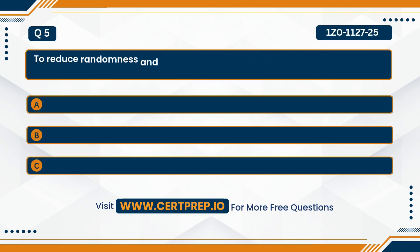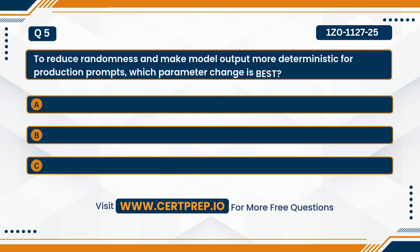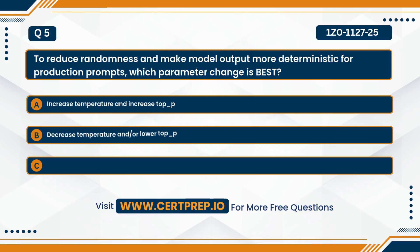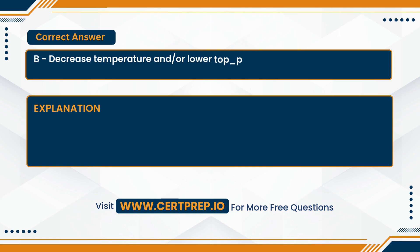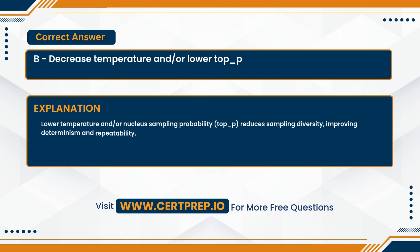Question five. To reduce randomness and make model output more deterministic for production prompts, which parameter change is best? A. Increase temperature and increase top P. B. Decrease temperature and/or lower top P. Or C. Disable stop sequences. The correct answer is B — decrease temperature and/or lower top P — which reduces sampling diversity, improving determinism and repeatability.